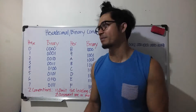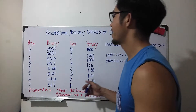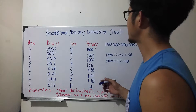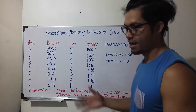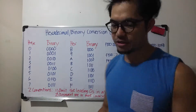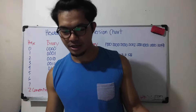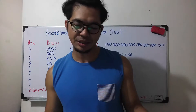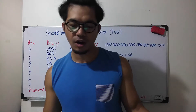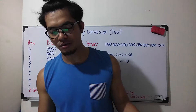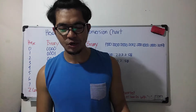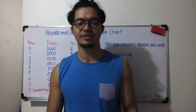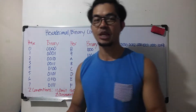In this video, I'm going to talk about a hexadecimal binary conversion chart that I found from the book CCNP Routing and Switching Route 300-101 Official Start Guide by Kevin Wallace.